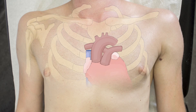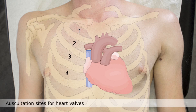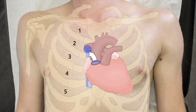Auscultate the individual valves in the following locations. Aortic valve: 2nd ICS at the right sternal border. Pulmonary valve: 2nd ICS at the left sternal border. Tricuspid valve: 4th ICS at the right sternal border. Mitral valve: 5th ICS at the left midclavicular line.